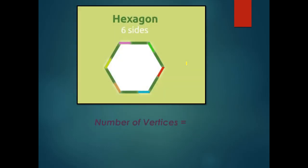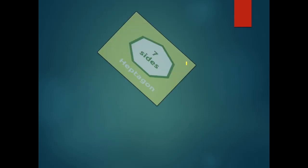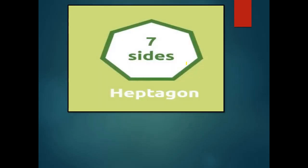If I have six sides, we call it a hexagon — six sides, six vertices. If the polygon has seven sides, we call it a heptagon. The word 'hepta' means number seven in Latin, so a polygon with seven sides and seven vertices is called a heptagon.